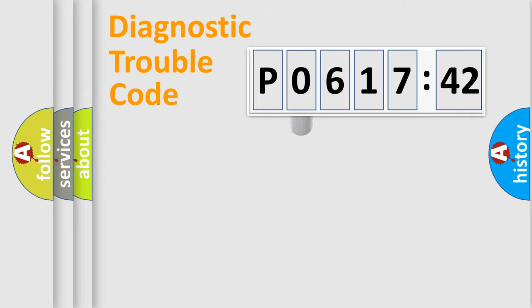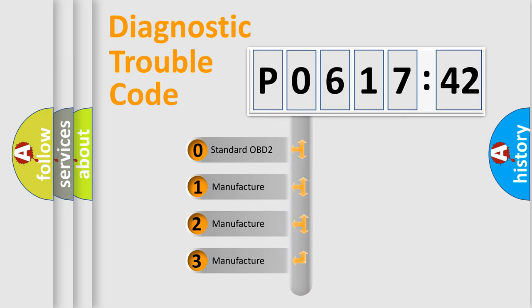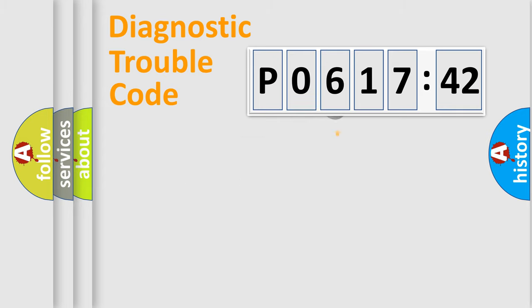The third character specifies a subset of errors. The distribution shown is valid only for the standardized DTC code. Only the last two characters define the specific fault of the group.